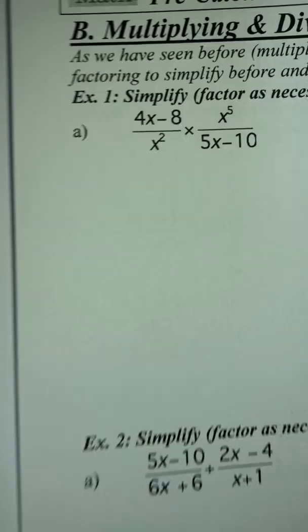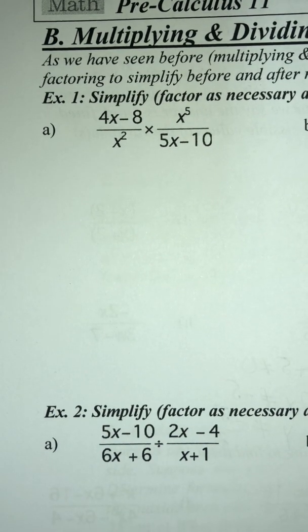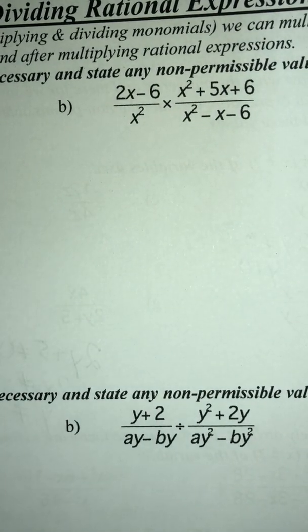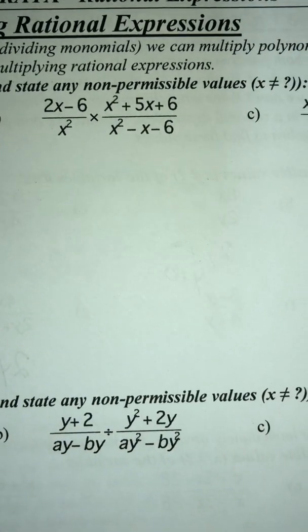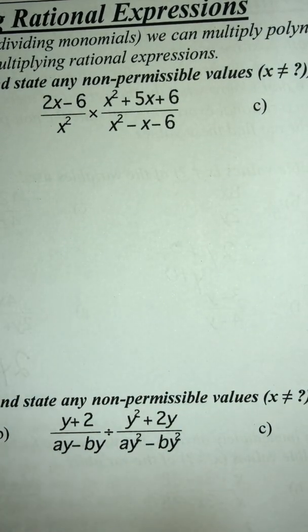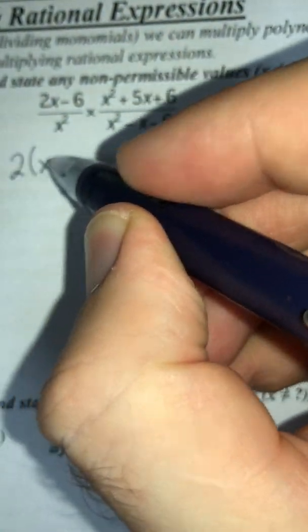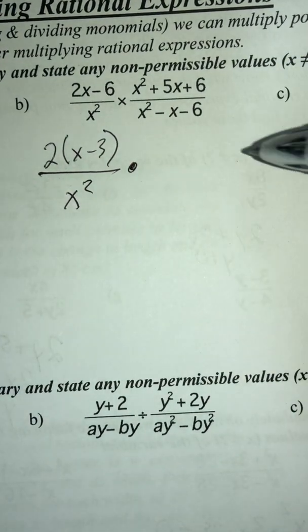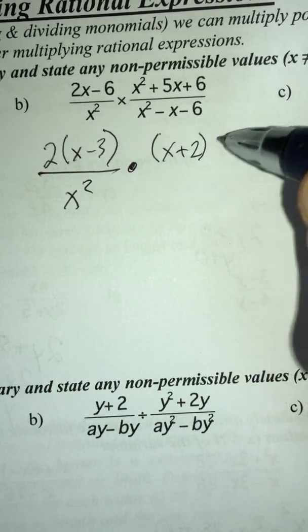Now we're going to multiply some rational expressions. The process is very similar. I'm going to do part b because it's slightly more complicated. The process is: factor, eliminate, then combine. On the top I can factor out a 2, getting (x − 3). Nothing factors out of the bottom. For the next numerator, what two numbers add to 5 and multiply to 6? That gives (x + 2)(x + 3).